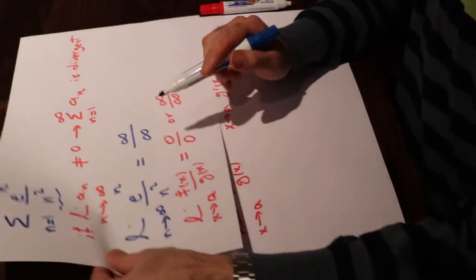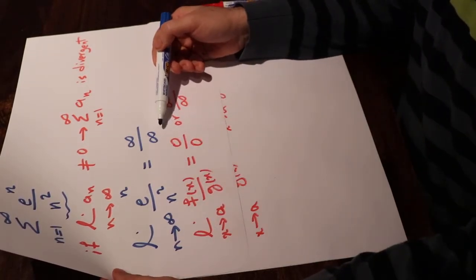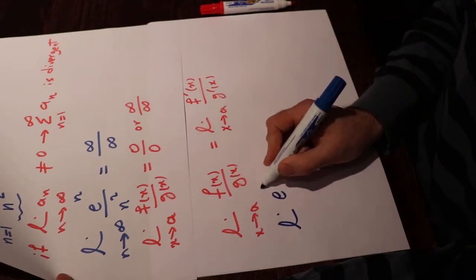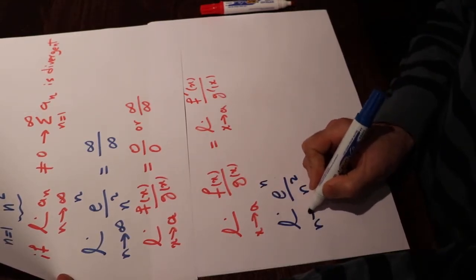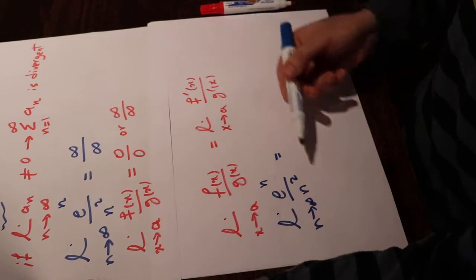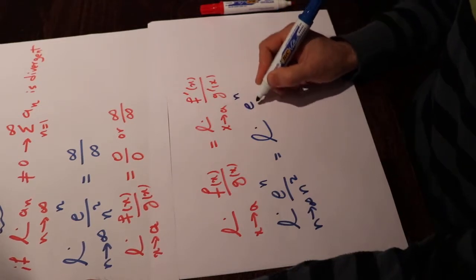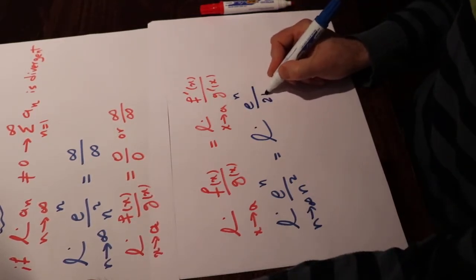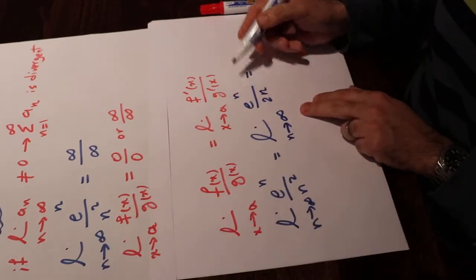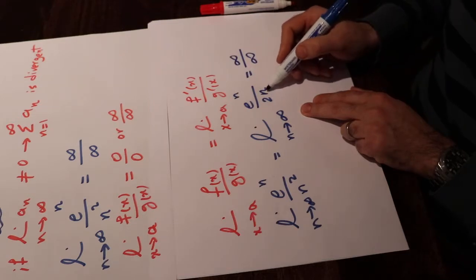The limit of eⁿ/n² when n goes to infinity is infinity/infinity. That means this limit will be equal to the limit of the derivative of eⁿ divided by the derivative of n². The derivative of eⁿ is eⁿ, and the derivative of n² is 2n, as n goes to infinity. But putting infinity in for n gives infinity over infinity again, because e to the power of infinity is infinity and two times infinity is infinity.